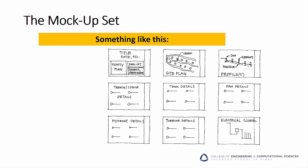The Micro Hydro team used the proposed numbering scheme as follows: the title page was designated 001, the site plan was 101, the profile view was designated 201, and the other pages designating other details were numbered from 301 to 305. Finally, the electrical schematic was numbered 401 since it was a standalone section of the drawing package. By allowing room, it's easy to insert additional details in any of these areas without having to rename all of the drawings.